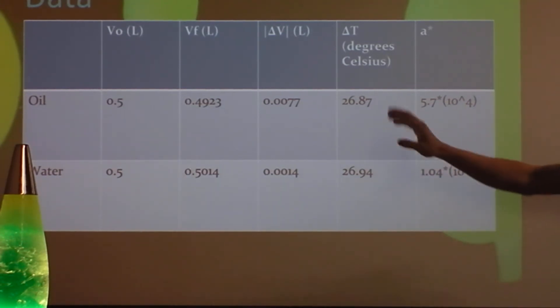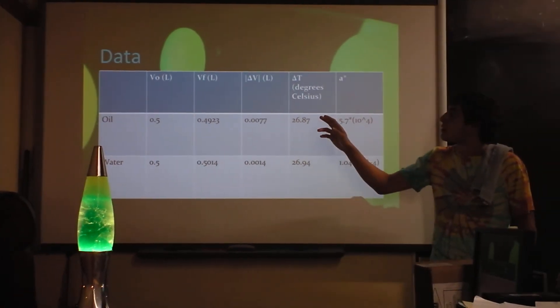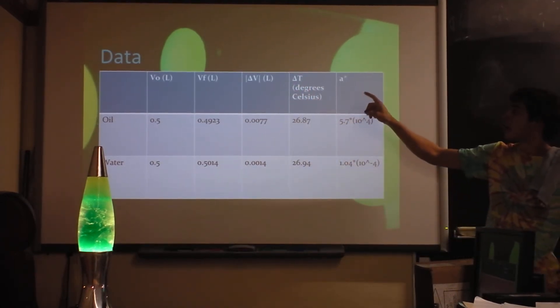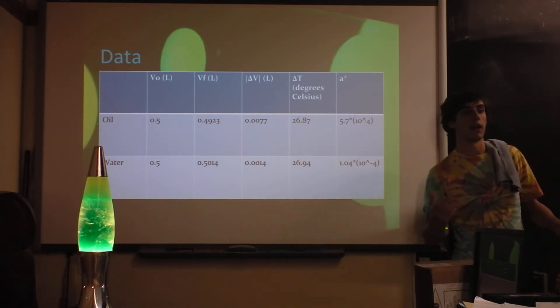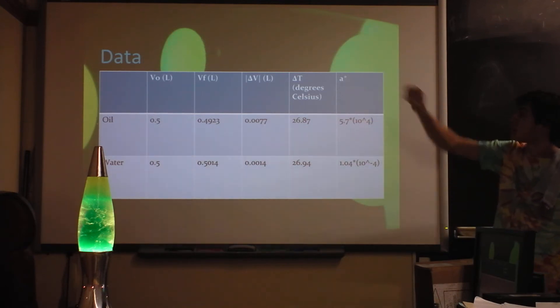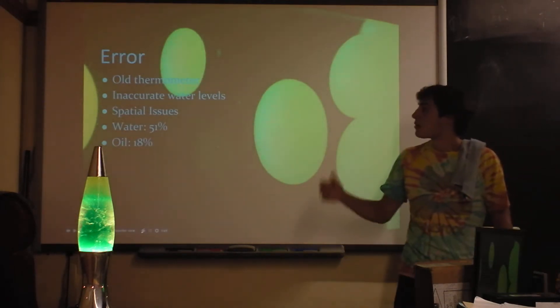And so I took the change in volume right there and the change in temperature, which I measured. And with that, I was able to calculate, by the equation I showed you earlier, the coefficient of apparent expansion. And for oil, I calculated 5.7 times 10 to the negative fourth. And for water, it was 1.04 times 10 to the negative fourth.